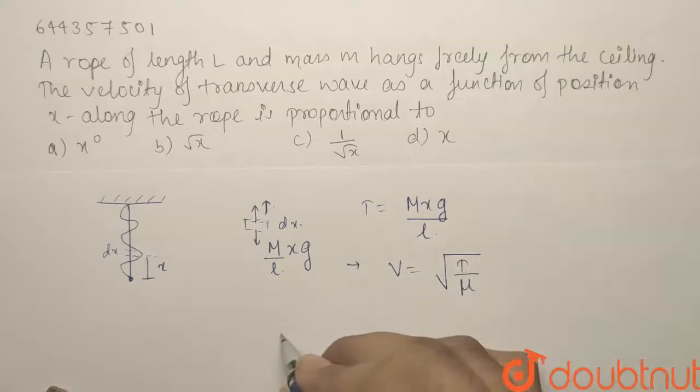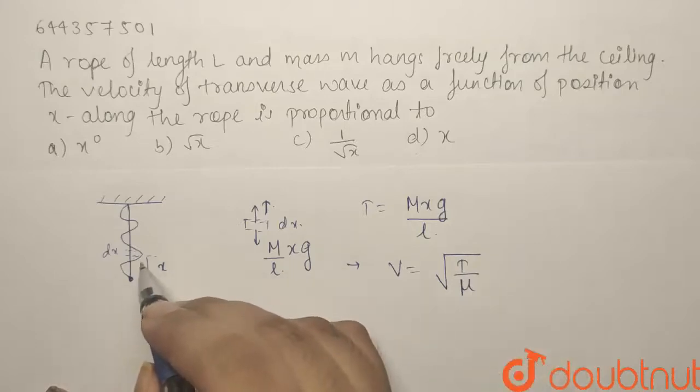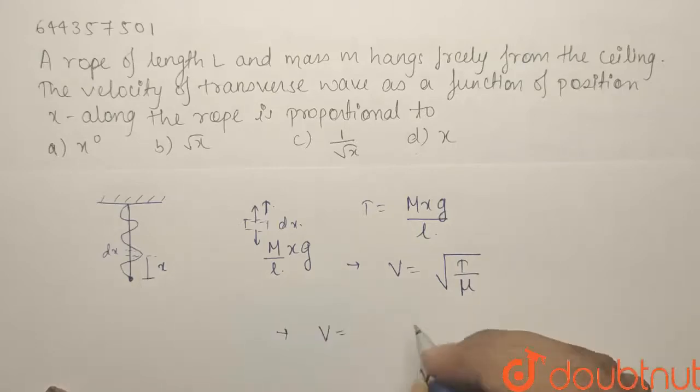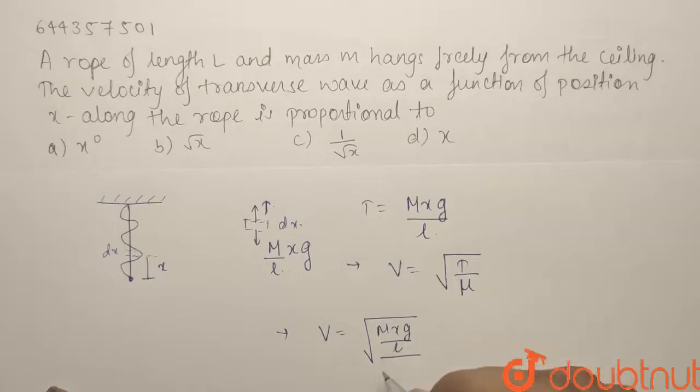Now, putting in the values, what will be our V? If we are at a distance x from the lower point, it equals tension Mxg by L upon μ. μ is what?